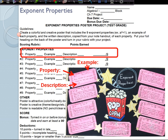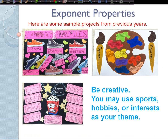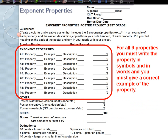For each property, we're looking to make sure that you have the property, the example, and the description — and that's worth nine points for each property. Be creative; you may use sports, hobbies, or interests as your theme, but you do need to have a theme. For all nine properties you must write the property in symbols and in words, and you must give a correct example that you create on your own — not taken from your notes or worksheets. You get three points for each property, three points for each example, and three points for each description, for a total of nine points per property.